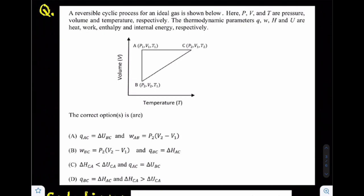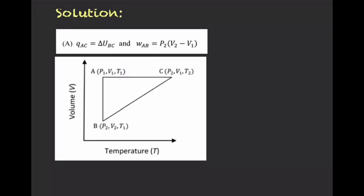Option A states: heat energy exchanged in process A to C equals change in internal energy in process B to C, and work done in process A to B equals P₂ into (V₂ minus V₁). Let us solve each part one by one. We start with the first half — change in internal energy in process B to C and heat Q in process A to C.